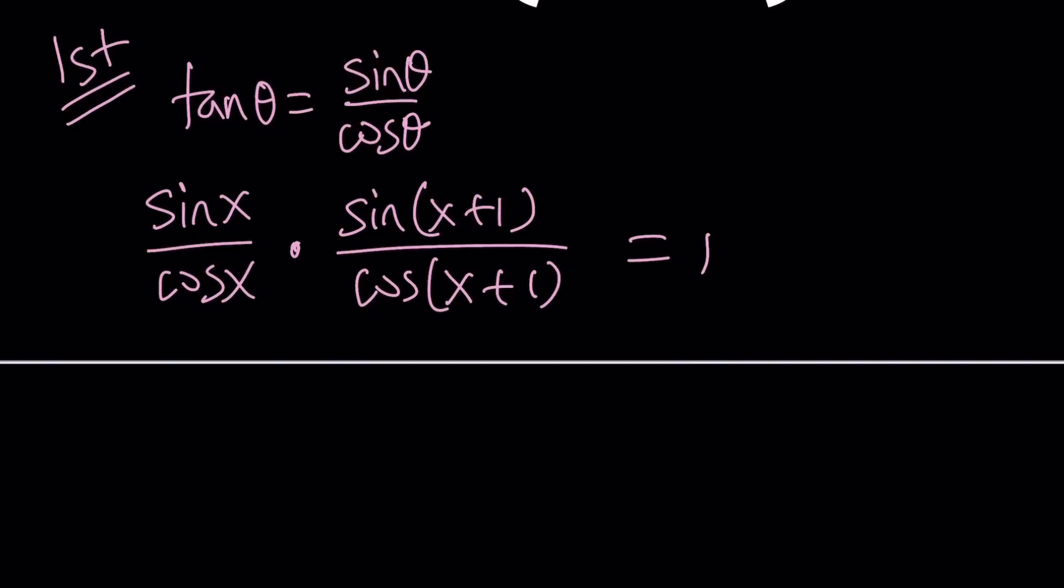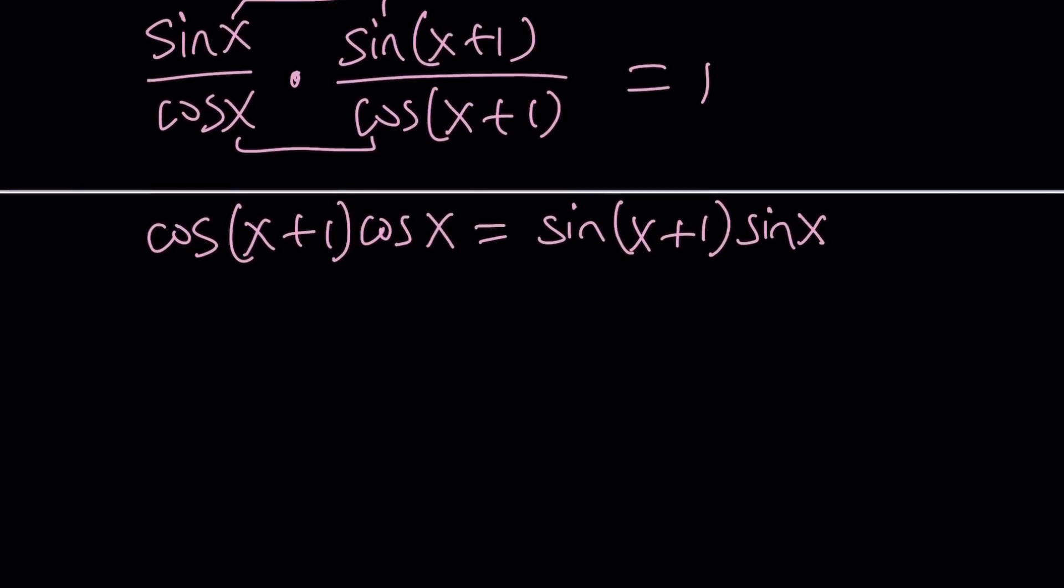Now, if this product was equal to something else besides 1, like 1 half or 2 or square root of 3, that would be a completely different story. But because it's 1, we can use the first method thanks to the problem. I'm going to put everything on the same side because I'm about to use an awesome identity.